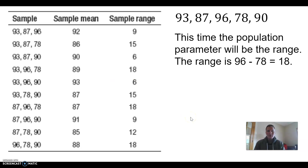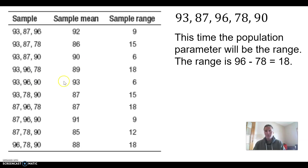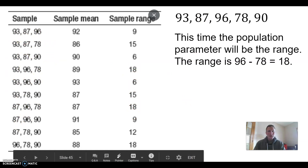Now let's go back to the problem where 3 scores were randomly selected out of 5 for Joe's test. This time, instead of using the mean as our statistic, our statistic will be the range. We're trying to estimate the population range by using a sample range. In the first sample, the highest minus the lowest is 96 minus 87, giving a sample range of 9. The ranges of all samples of size 3 are listed on the right.